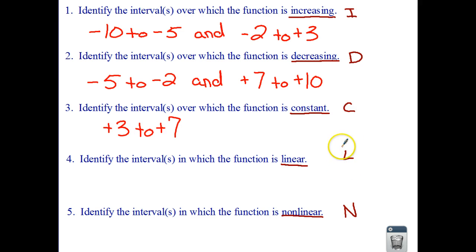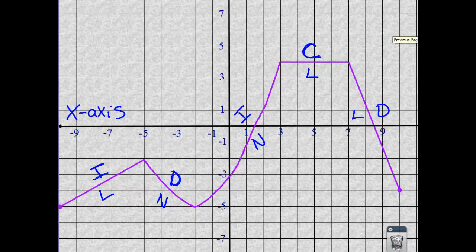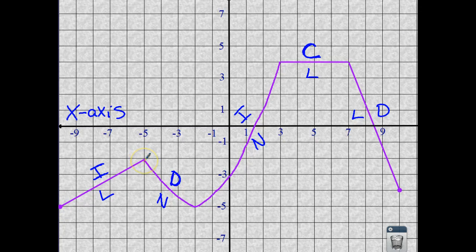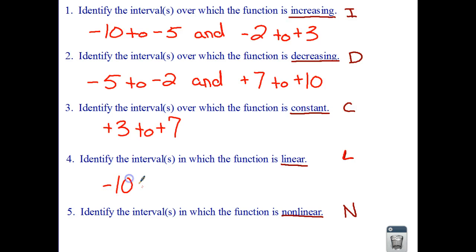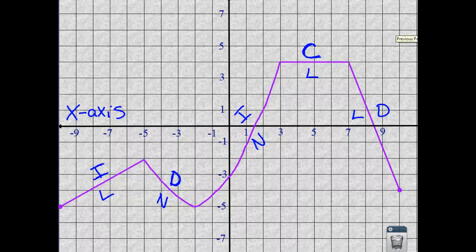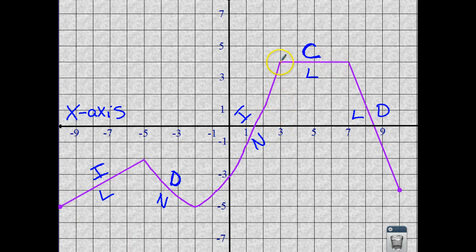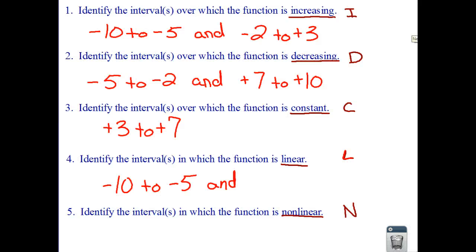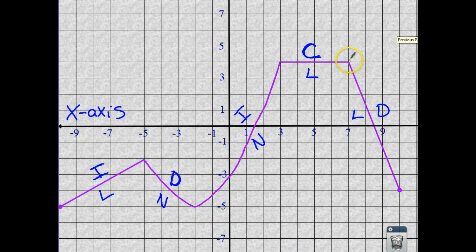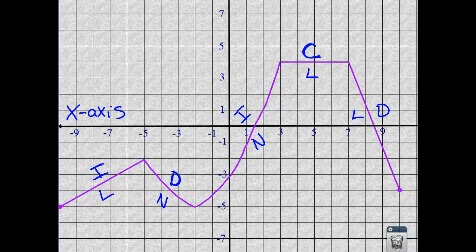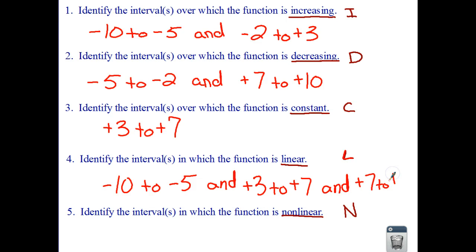And now we are looking at linear. So we're looking to see what portions of our graph have a linear look to it. And we stated that from negative 10 to negative 5 is one of them. And we had one, actually I think we had two more. Yeah, we had two more. The constant line was also linear, so that was from 3 to 7. And one more. That was the last one. We went from 7 to 10.